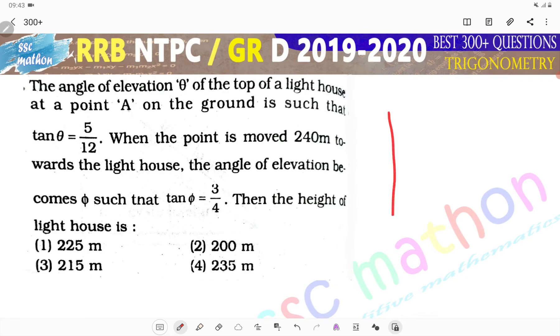Sir, there is a lighthouse. It was a theta. The ratio is 5 by 12. It is a distance between 240 meters.